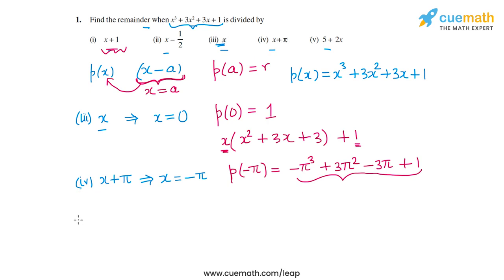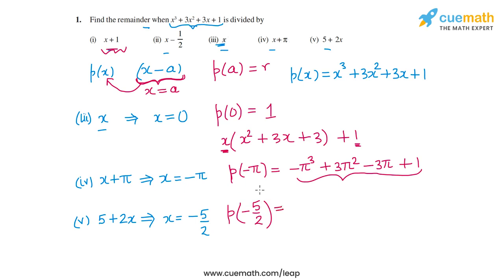The fifth part has a divisor polynomial of (5 + 2x), which has a zero of x = -5/2. So we find p(-5/2) = (-5/2)³ + 3(-5/2)² + 3(-5/2) + 1 = -125/8 + 75/4 - 15/2 + 1.